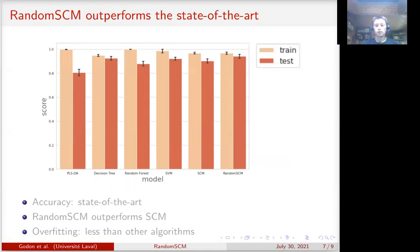Here, the accuracy of the random SCM has been compared to the scores of other common approaches in metabolomics: partial least squares discriminant analysis, decision tree, random forest and support vector machines. We also added the set covering machine to evaluate the need for a more powerful model.